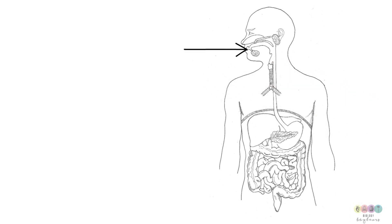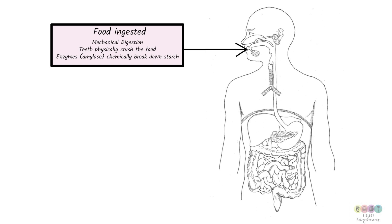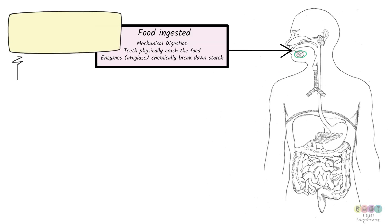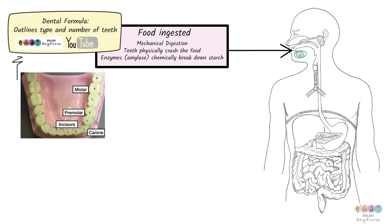The process begins with ingestion. Food is taken into the mouth. And then immediately digestion commences. Because the teeth crush and grind the food. That's mechanical digestion. And the action of amylase acting on starch. That enzyme action is chemical digestion. It's very important that you know the dental formula. And there is a separate video on that. So please watch it.